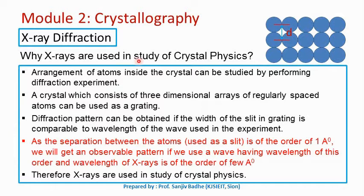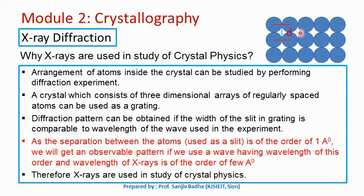Why are X-rays used in the study of crystal physics? In a crystal, atoms are arranged following a certain geometrical pattern and form a closely packed structure to get minimum energy. These atoms are assumed to be spherical in shape. When these spheres are kept close to each other, some void space remains between them. This void space can be utilized as a slit. Atomic planes pass through the centers of these atoms and these slits lie very close to each other. So this crystal structure can be utilized as a diffraction grating — an arrangement of a number of slits which lie very close to each other.